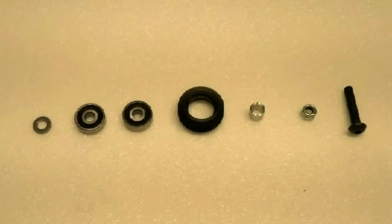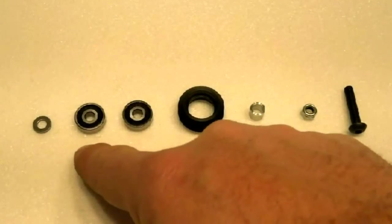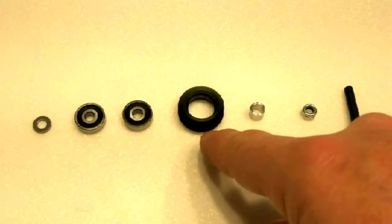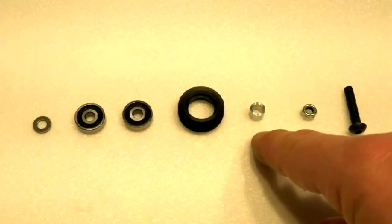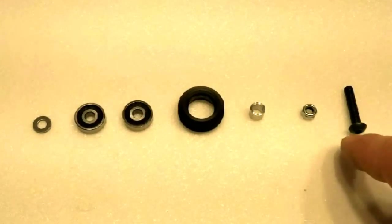In your kit you should have received a precision spacer, two bearings, Delron Dual V Wheel Sleeve, quarter inch spacer, M5 nut, and M5 screw.